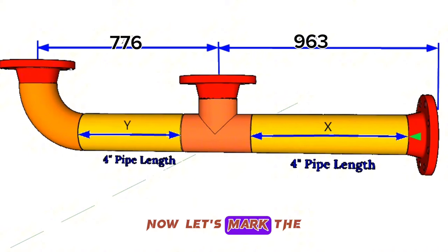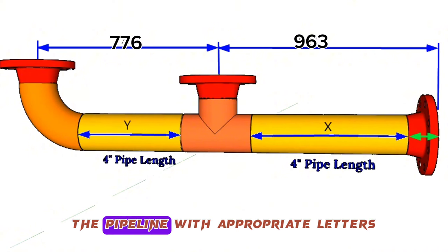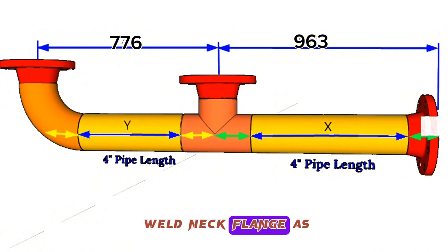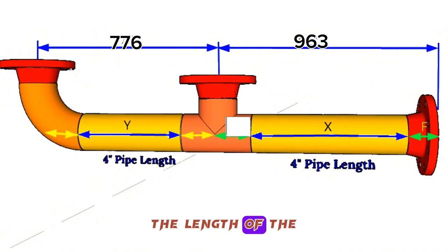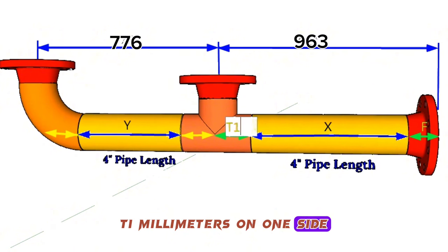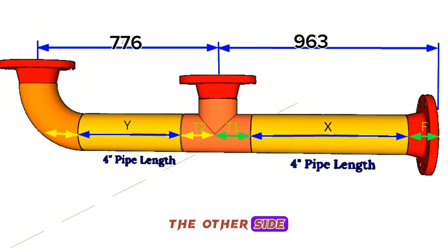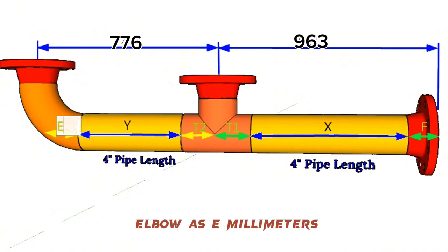Now let's mark the other pipe fittings in the pipeline with appropriate letters: the size of the weld neck flange as F millimeters, the length of the pipe tee from center to end as T1 millimeters on one side, and T2 millimeters on the other side, and the length from the center to the end of the 90-degree pipe elbow as E millimeters.